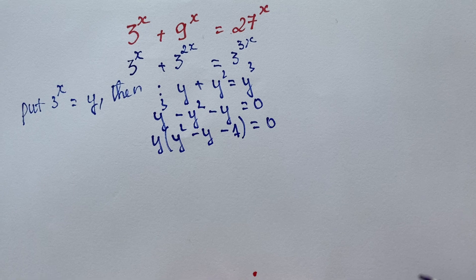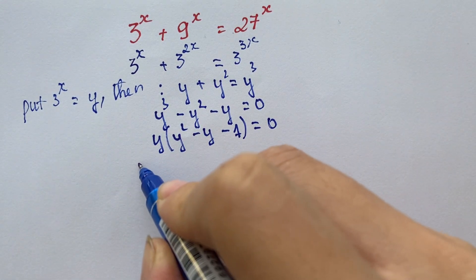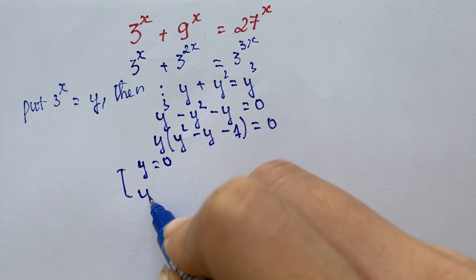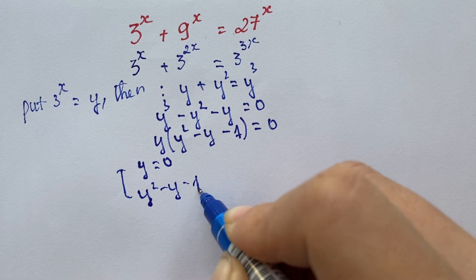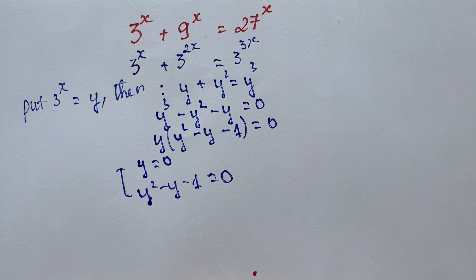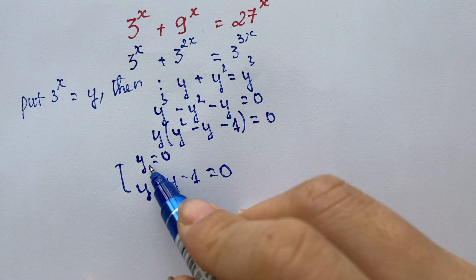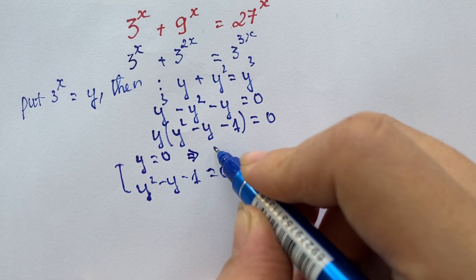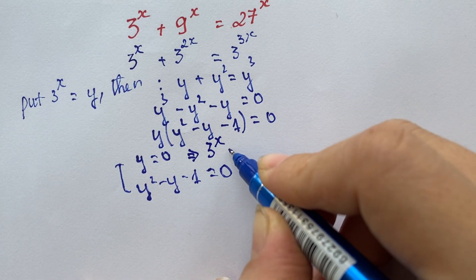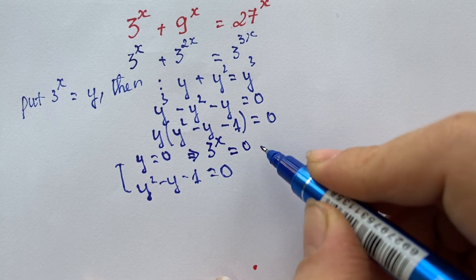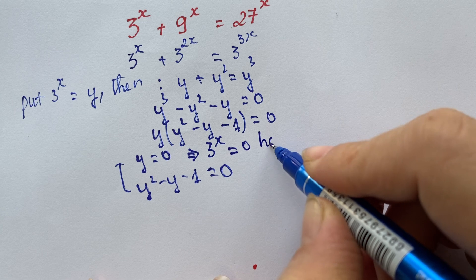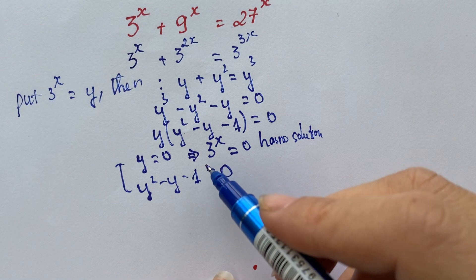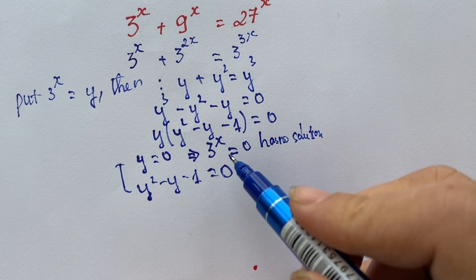So therefore, we have y equals 0, right? And y squared minus y minus 1 equals 0, too. For y equals 0, we have 3 power x equals 0, right? And in this equation there's no solution, because 3 power any number is not equal to 0.